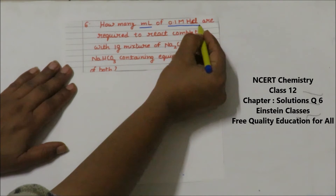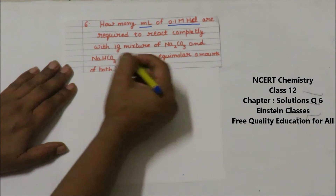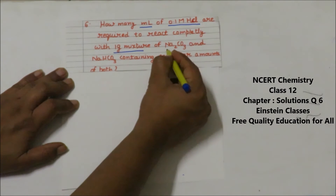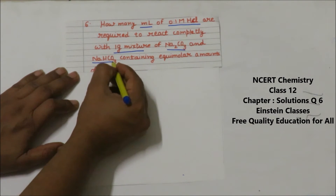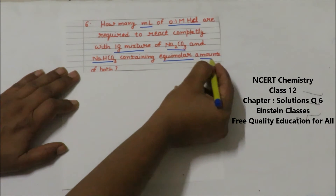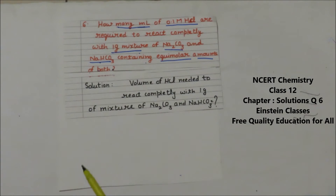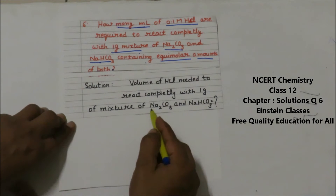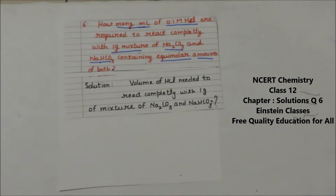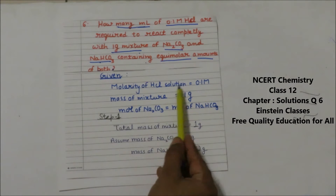We are going to discuss problem number six from the NCERT back exercise solutions. The question asks: how many milliliters of 0.1 molar HCl is required to react completely with a one gram mixture of Na₂CO₃ and NaHCO₃ containing equimolar amounts of both? Our aim is to find out the volume of HCl needed to react completely with this one gram mixture.